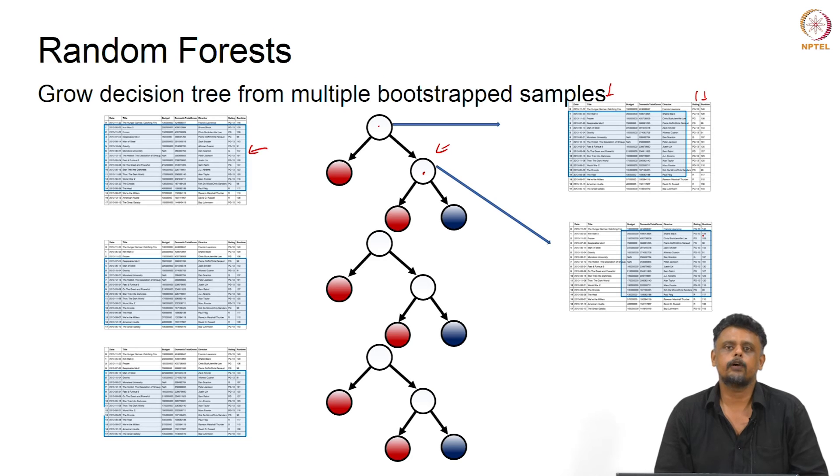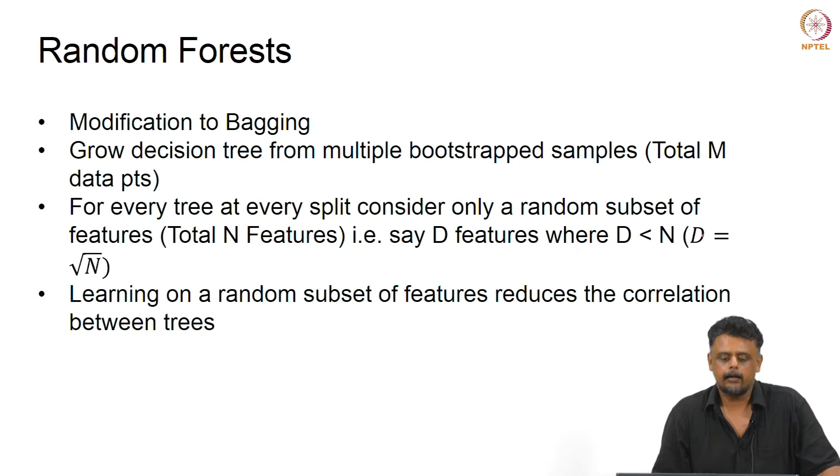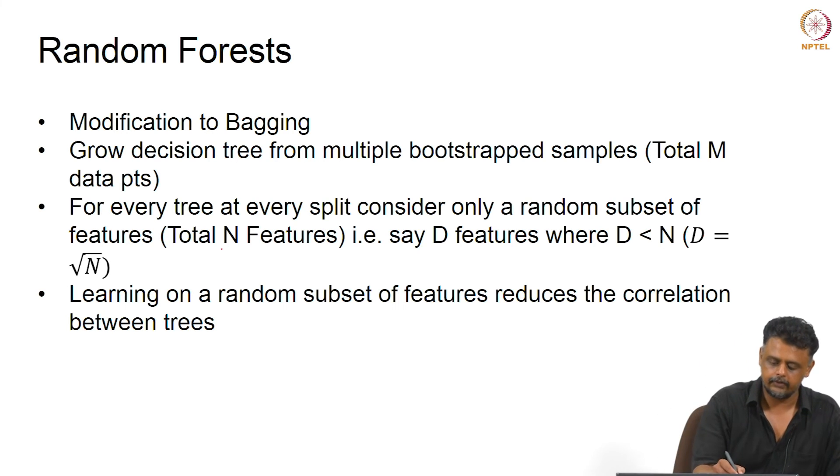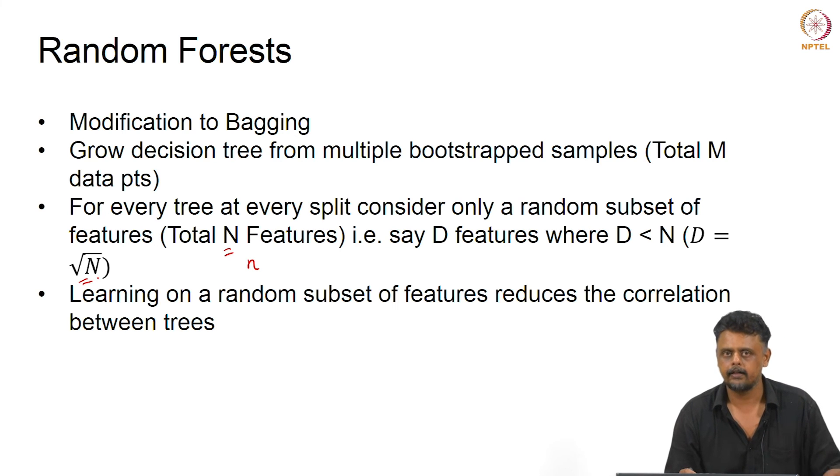This reduces the correlation between the trees that we train. That is the principle behind random forests. It's a modification to bagging wherein we grow decision trees from multiple bootstrap samples—let's say we have M data points—and for every tree at every split, we consider only a random subset of features. If we have a total of N features, we typically use D features, where D is on the order of square root of N. Learning on this random subset reduces the correlation between the trees.